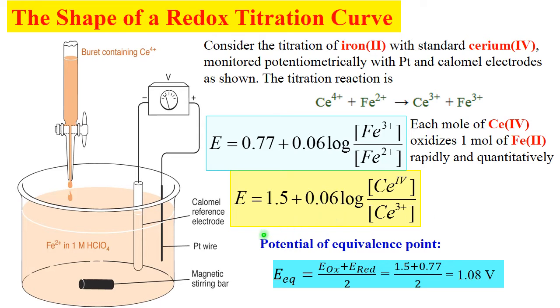Now, what will be the equivalence point potential? Theoretical potential of end point can be calculated by very simple formula. Potential of equivalence point is average between oxidizing and reducing agent redox potential. So, 1.5 plus 0.77 divided by 2.